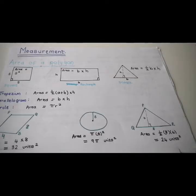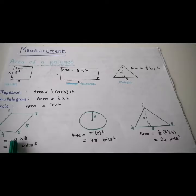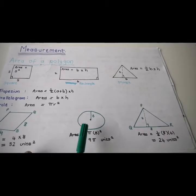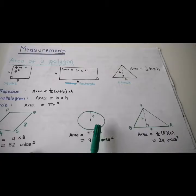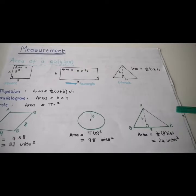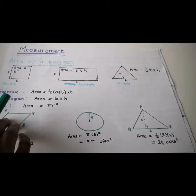Let's take a few examples. The area of a rectangle is breadth times height: 4 times 8, which is 32 units squared. The area of a circle is pi r squared — r is 3, so it's pi times 3 squared, which gives 9 pi units squared. The area of a triangle is half of base times height: half of 8 times 6, which gives 24 units squared.